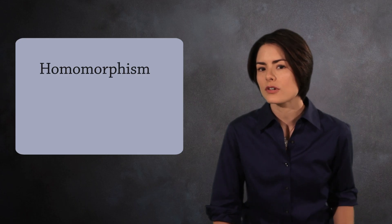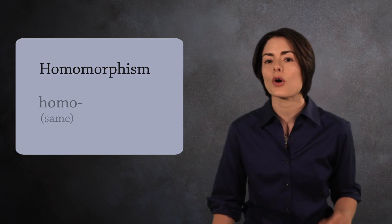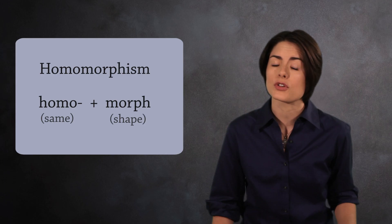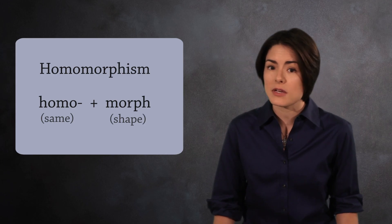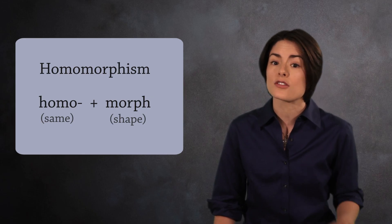Take a closer look at the word homomorphism. It's a combination of homo, which means same, and morph, which means shape. But don't be misled by this name. If two groups are homomorphic, it doesn't mean they're the same. It just means they're similar.